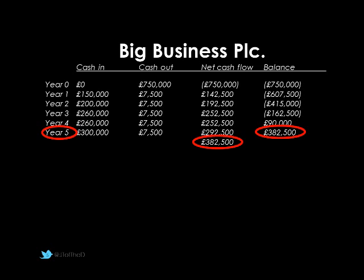It's actually a five-year project, so looking at year five, this is where the figures come from for our equation. Our net cash flow column has a total at the bottom of £382,500 — that's the total of negative £750,000 plus £142,500, £192,500, £252,500, £252,500, and £292,500. It is the same figure as our final balance — all that's happened is we've added those net cash flows cumulatively as we've gone along. For an average, we take £382,500 and divide it by five to get our average profit, which we then look at in relation to the £750,000.